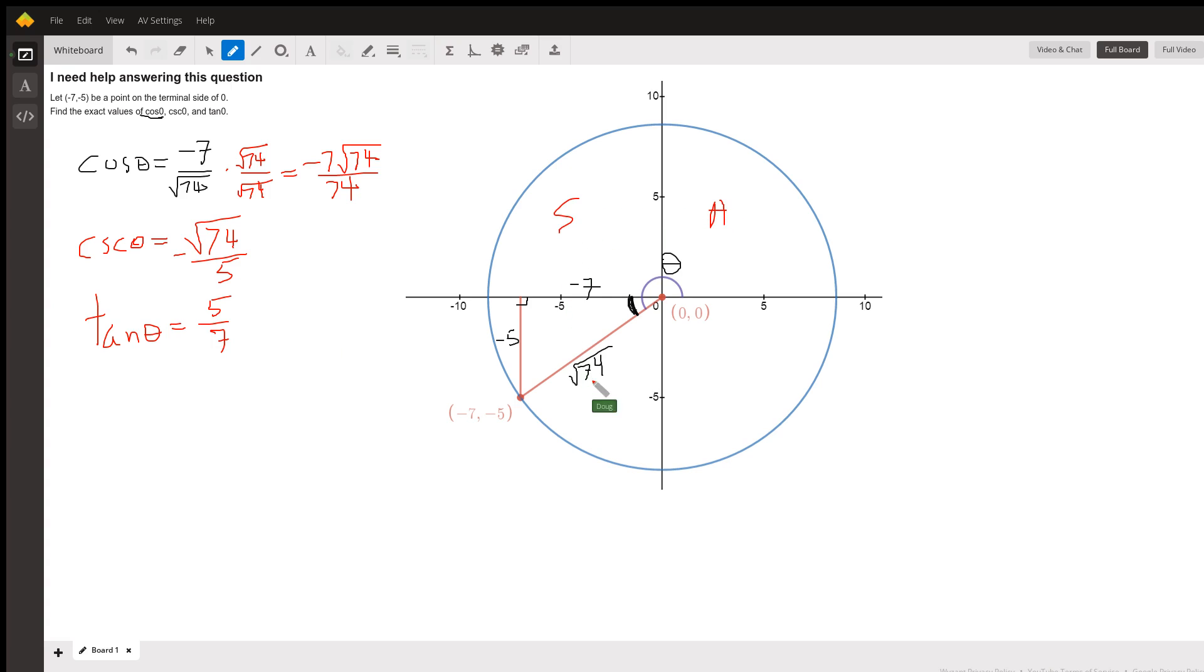If you're familiar with the acronym or mnemonic device, all students take calculus, this tells you that in the first quadrant all trig functions are positive. In the second quadrant, the sine and its reciprocal cosecant are positive. In third quadrant, the tangent and its reciprocal cotangent are positive. And that makes sense because the cosine is negative, the cosecant is negative, but the tangent is positive in the third quadrant.